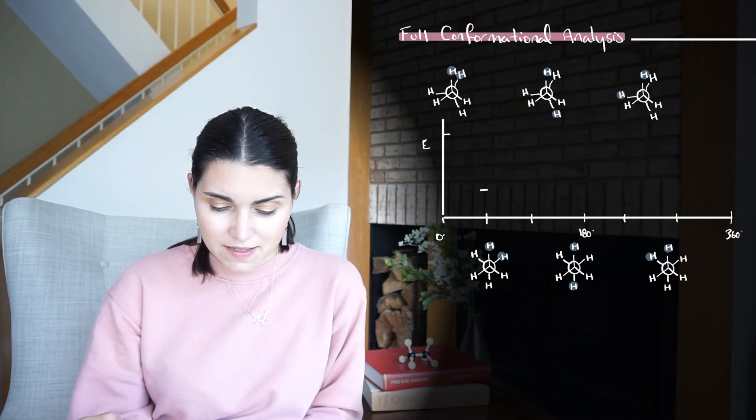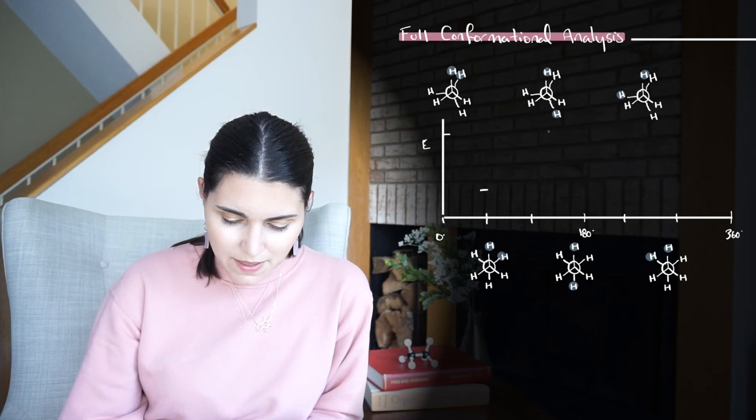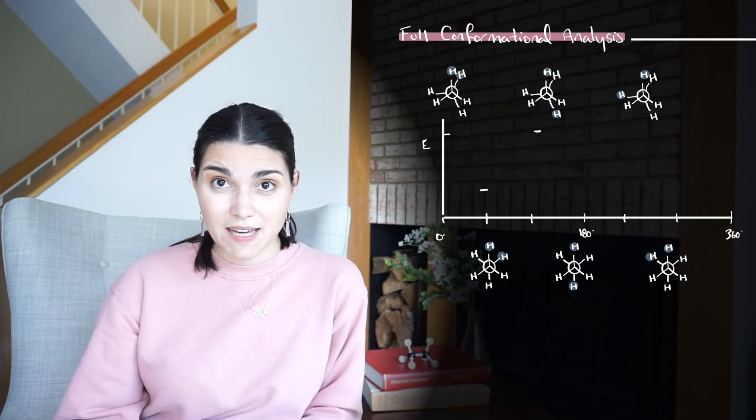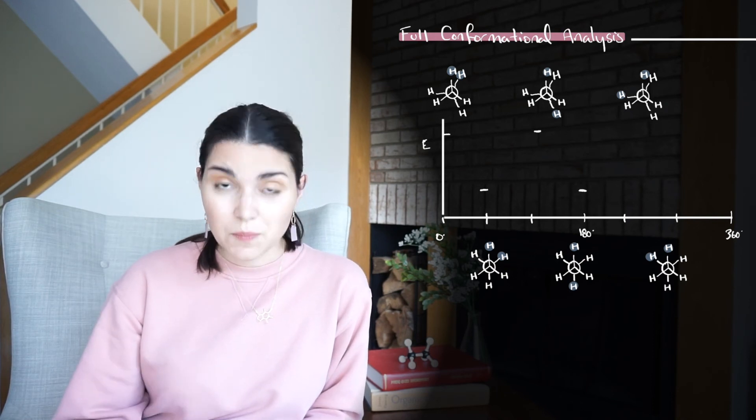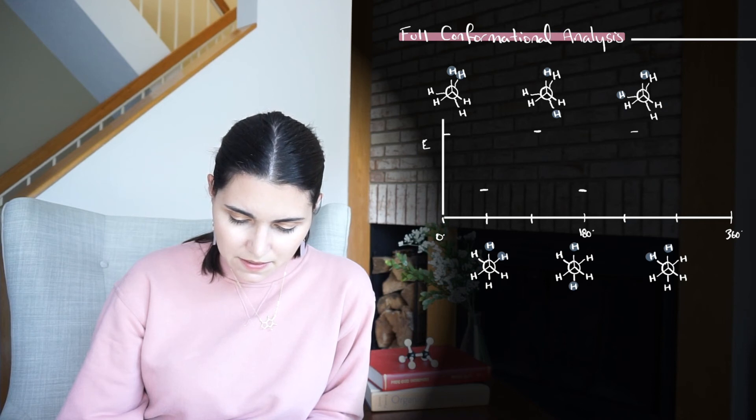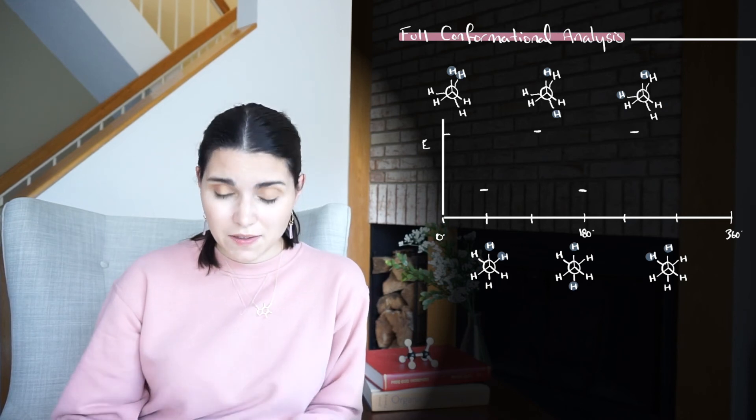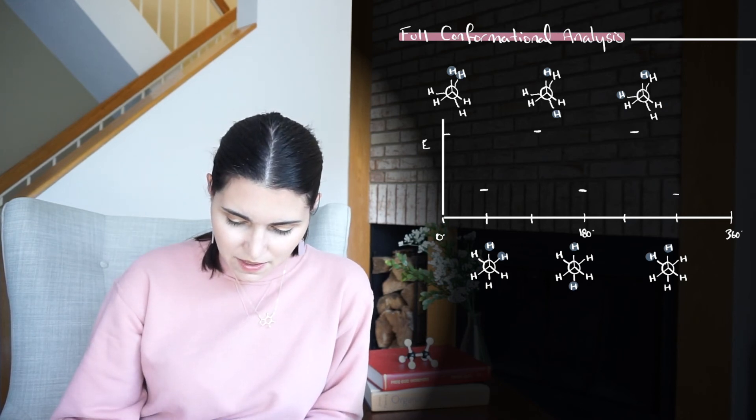Then we rotate again another 60 degrees, we get back to an eclipsed conformation. We rotate again, we get back to a staggered. We rotate one more time, we get back to an eclipsed, and then finally we get back to staggered.